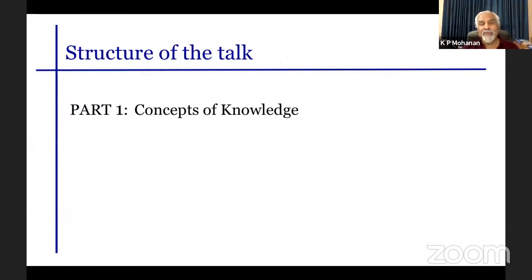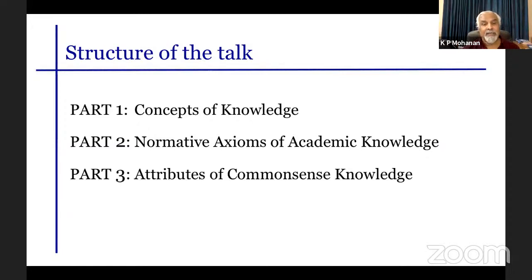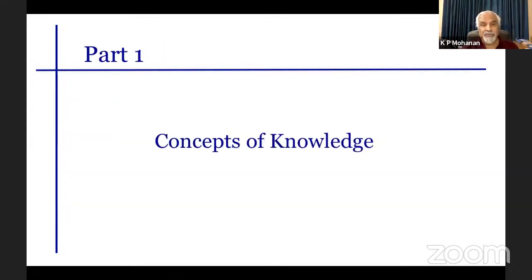This is the structure of the talk. In the first part, I will go through various concepts of knowledge. In the second part, we'll go through the normative axioms of academic knowledge. In the third part, we'll contrast those with the characteristics of common sense knowledge. And in the fourth part, we will look at the elements of common sense knowledge in academic fields — the practical affairs. So let's go to the first part: concepts of knowledge.